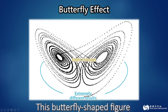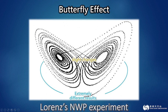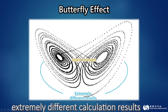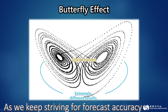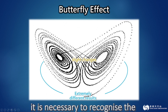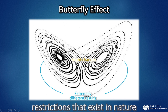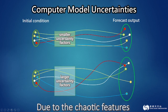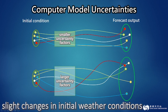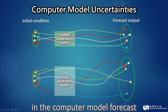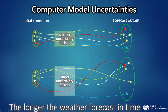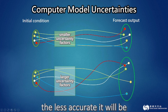This butterfly-shaped figure shows the data resulting from Lorenz's NWP experiment. The two wings represent two sets of extremely different calculation results caused by subtle changes. As we keep striving for forecast accuracy, it is necessary to recognize the restrictions that exist in nature. Due to the chaotic features of weather changes, slight changes in initial weather conditions may lead to substantial differences in the computer model forecast. The longer the weather forecast in time, the less accurate it will be.